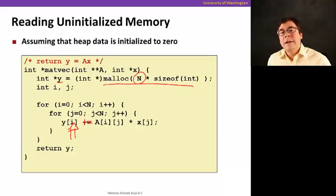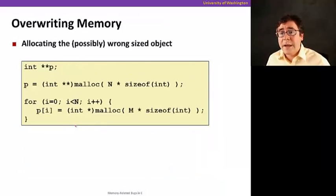So do not assume that the free blocks in the heap, when you allocate it, they're going to be initialized to zero, unless you use a function that calls it, like calloc, for example, initializes to zero. But normally people don't do it because it's expensive.